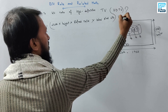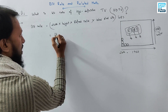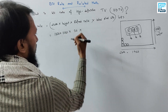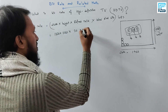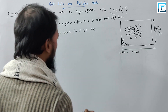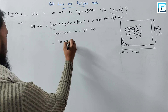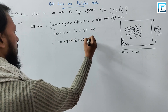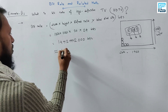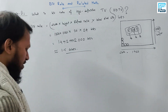The bit rate calculation: 1920 × 1080 × refresh rate 30 × color depth 24 bits per pixel = 1,492,992,000 bits per second, which is approximately 1.5 Gbps — giga bits per second.